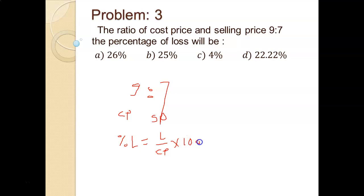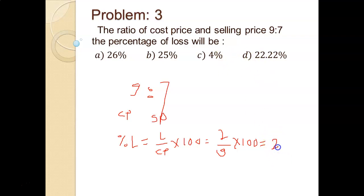What will be loss? Loss is 2. So 2 upon CP, and CP is 9. Therefore 2 upon 9 into 100, which gives 22.22%. So option D is the correct answer.